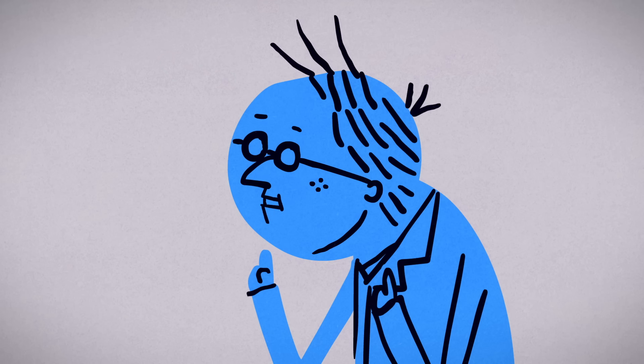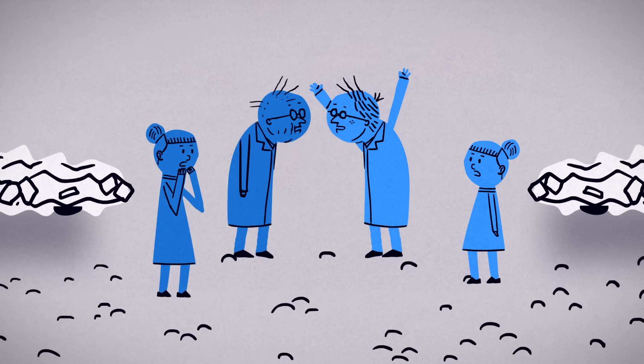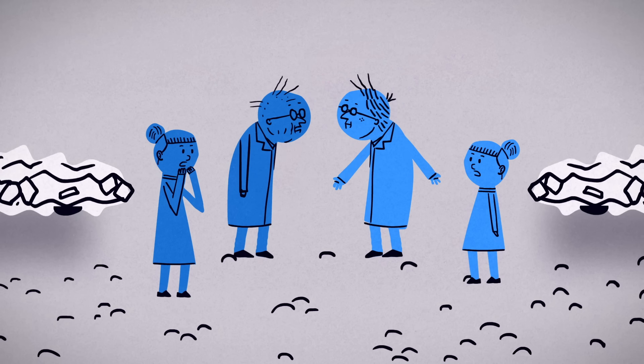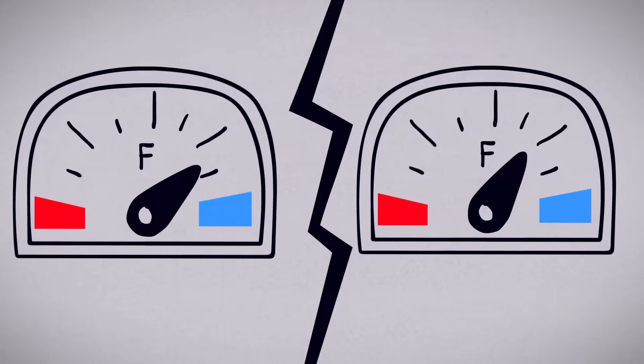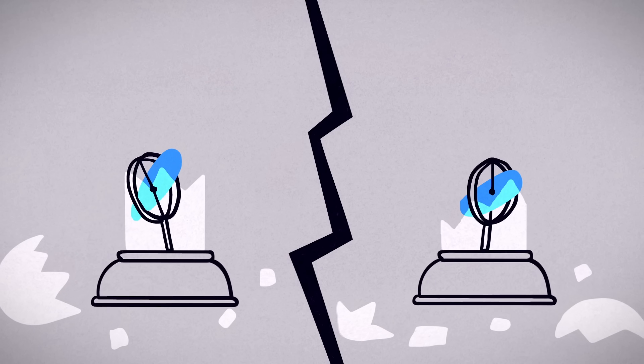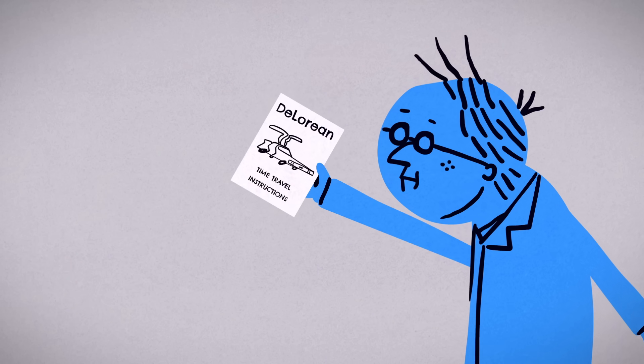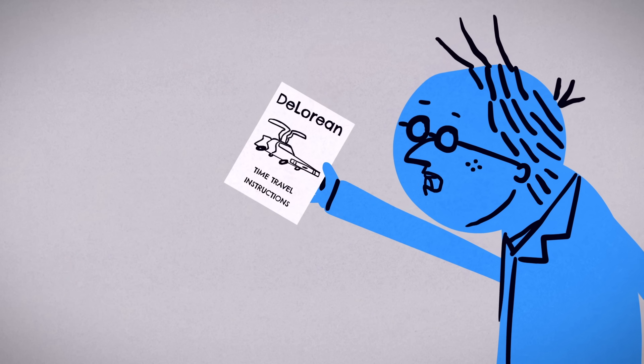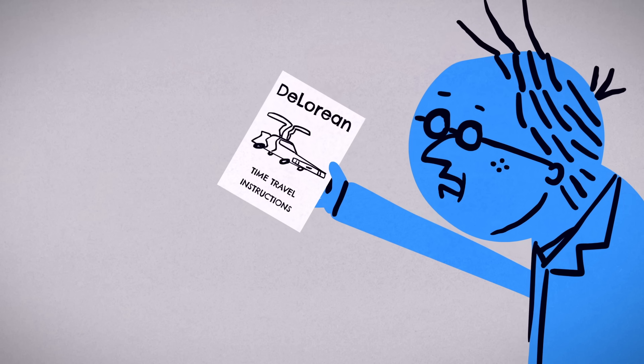The only hope is to merge the time streams by having each version of you simultaneously time travel home. You both have plenty of fuel, but the crash broke your chronostabilizing gyroscopes, and your cars can only time travel under very specific circumstances.